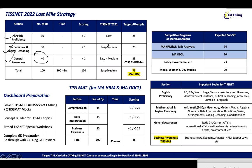There is a sectional cutoff for GK — 14 is the cutoff for the GK section. There are no other sectional cutoffs. Your target score should be somewhere around 75 to 80 questions correct. The paper is 100 questions, 100 minutes, 100 marks, with no sectional time limit, so you can divide your time across sections as you prefer.